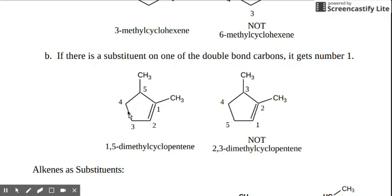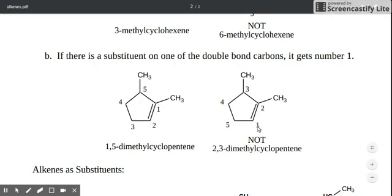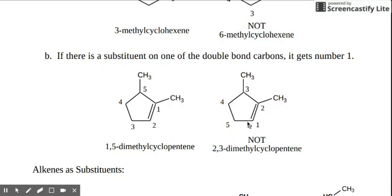Then we go all the way to two, three, four, and then five will be for the other methyl. Not going the other way, where two would be the carbon with the substituent. One should begin here instead and we go clockwise. So this is the correct way of numbering, and the final answer will be 1,5-dimethylcyclopentene.